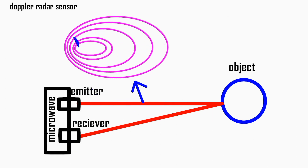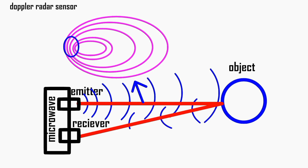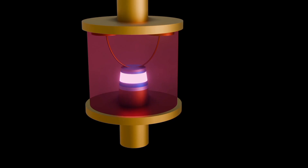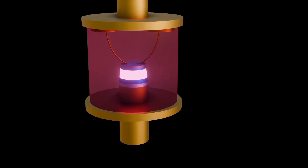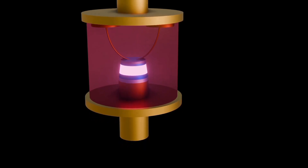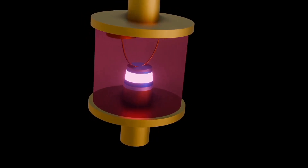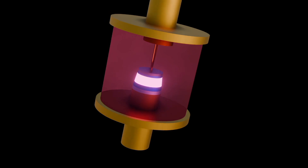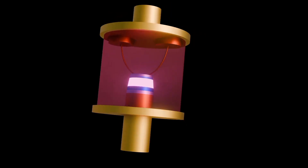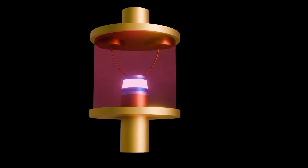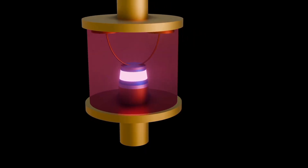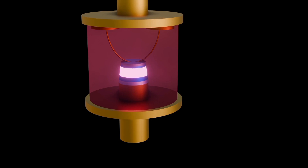Microwave emitters include microwave oscillators, which generate microwave signals at specific frequencies. Common types include Gunn diodes and magnetrons. Microwave emitters also contain amplifiers which boost the microwave signal strength. Traveling wave tube amplifiers (TWTAs) and solid-state power amplifiers (SSPAs) are frequently used.